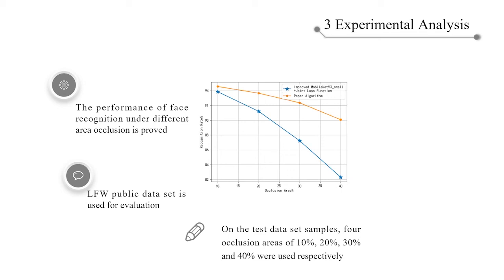It can be seen from the experimental results that the appearance of occlusion increases the difficulty of face recognition algorithm. With increasing occlusion area, this algorithm can maintain a good accuracy and still has a stable accuracy when an occlusion area is greater than 20%. Therefore, this algorithm is more robust to face recognition with partial occlusion.